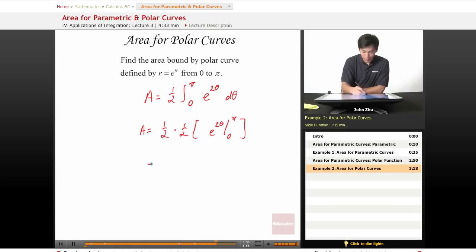And if we evaluate this, we get something like 1 over 4 times e to the 2 pi minus e to the 0, which is 1.